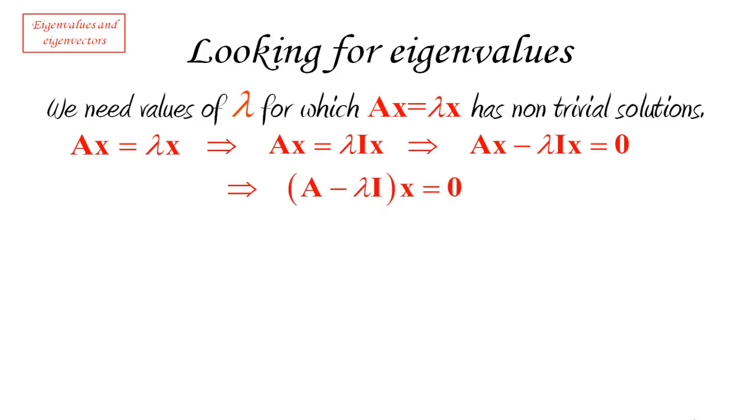We have an equation which looks like a matrix times a vector, an unknown vector, is equal to 0. Well, this is a homogeneous linear system, and we know when a homogeneous linear system, by the way n equations and n variables, when such a system has non-trivial solutions.